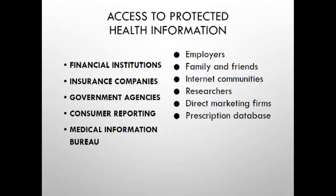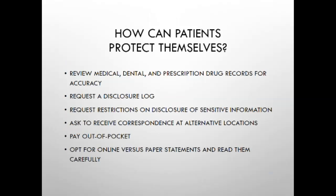Those who may have access to PHI include financial institutions, insurance companies, government agencies, consumer reporting agencies, the Medical Information Bureau, employers, family and friends, internet communities, researchers, direct marketing firms, and prescription databases — though not all of those necessarily have authorized access. Patients can protect themselves by reviewing medical, dental, and prescription drug records for accuracy, requesting a disclosure log, requesting restrictions on disclosure of sensitive information, asking to receive correspondence at alternative locations, paying out of pocket, and reading online or paper statements carefully.